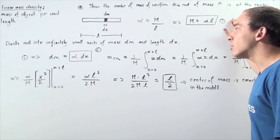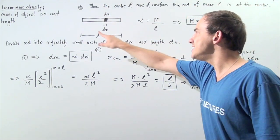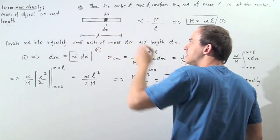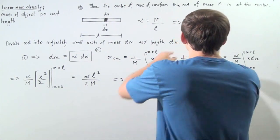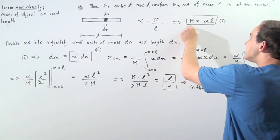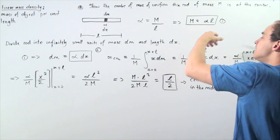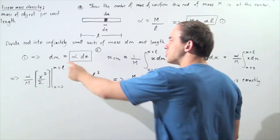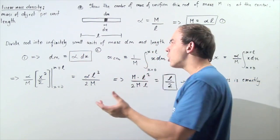Let's begin by dividing our rod into infinitely small units of mass dM and length dx. Here's one specific unit: it has an infinitely small change in length dx and an infinitely small change in mass dM. From equation one, we can deduce that an infinitely small change in mass dM is equal to the same constant alpha multiplied by infinitely small change in x.